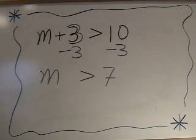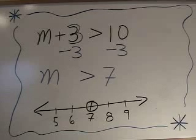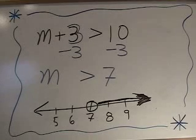Now this tells us that m is greater than 7. And we remember how to graph this: draw a number line, an open circle at 7, and shade the number line.